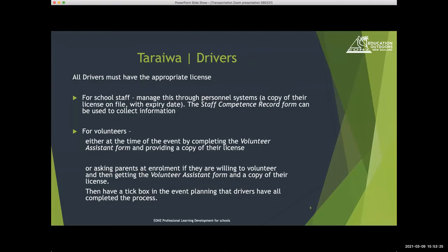For drivers, they must all have the appropriate licence. For school staff, a good efficient way of managing this is through your personnel systems — just hold a copy of their licence on file. It's great if you can track an expiry date against that, as we can get caught out with those dates. It can work alongside tracking first aid certificates and expiry dates. The staff competency record form can help you collect that information, and then it's about how it works best with your personnel systems.